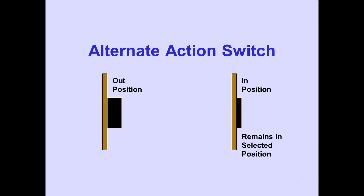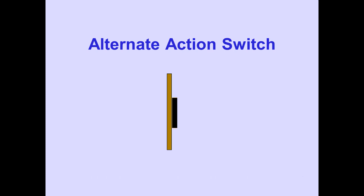Alternate action switches have two positions: out or in. When pushed in, the switch is on and remains in the selected position. System operation may be delayed until system logic has been established. When pushed a second time, the associated system is turned off and the switch returns to the out position and remains in the off position.